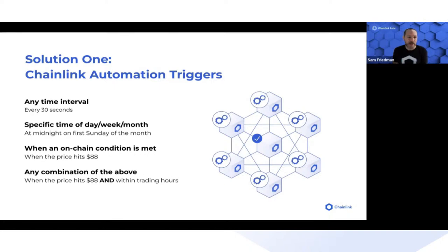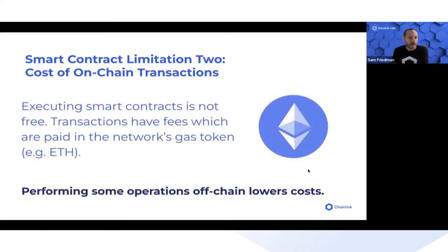Complex triggers might combine function return values, price oracle return values, or time. The second limitation of smart contracts is that all computations cost some amount of gas token.